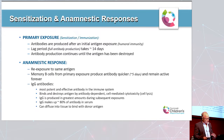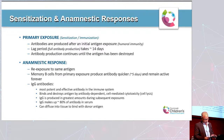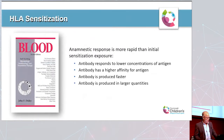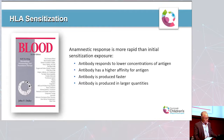IgG can diffuse into tissue to bind donor antigen. The body's humoral response to donor antigen during and after organ transplantation can be very quick and very destructive to the transplanted organ. The repeat exposure is more rapid than the initial sensitization exposure — the antibody responds to lower concentrations of the antigen, has a higher affinity, is produced faster, and is produced in larger quantities.